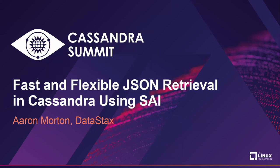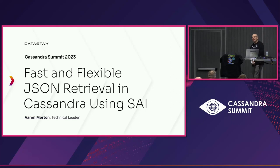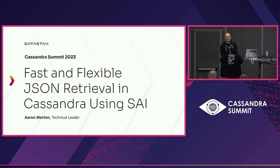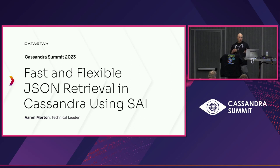Let's get started. My name is Aaron Morton. I've been involved in the Cassandra project since the middle of 2010 and I've spent my professional career since the beginning of 2011 just focusing on Cassandra. I work at Datastax now. What I want to talk about today is how we made a JSON retrieval API.